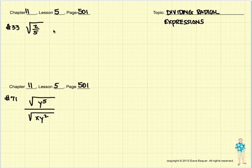Let's start off with number 33. And we're going to rewrite this as the square root of 2 in the numerator and the square root of 5 in the denominator.